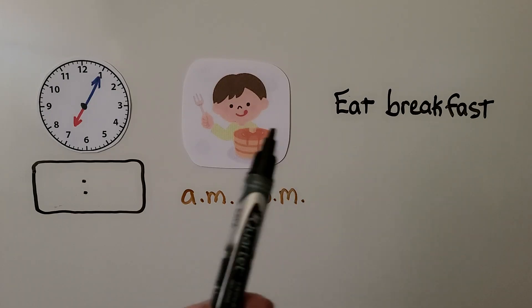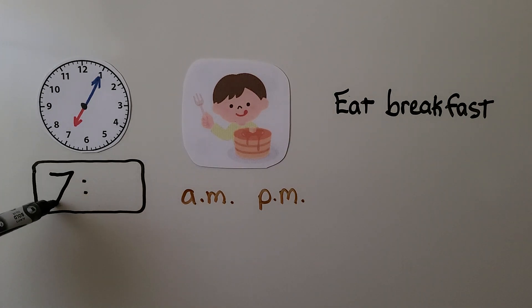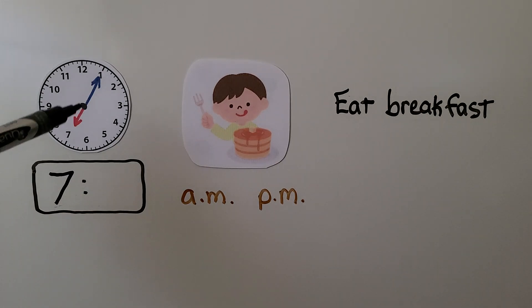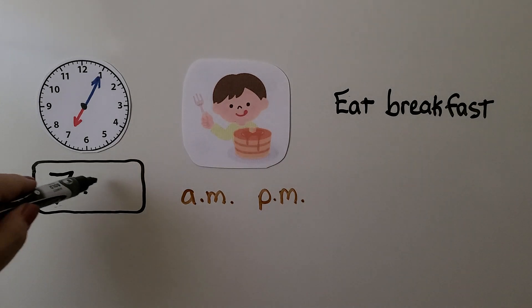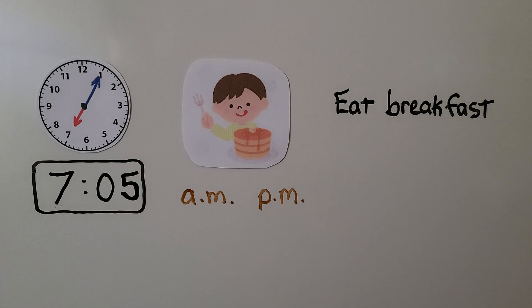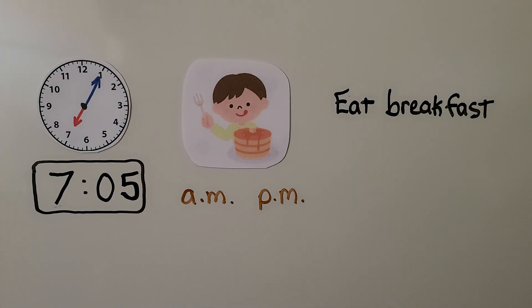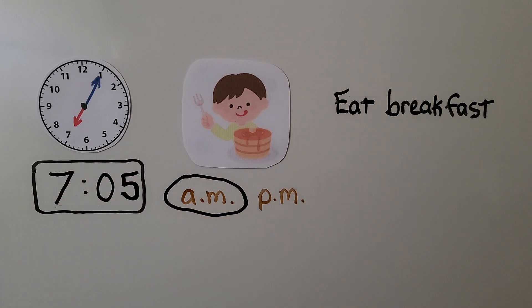This one says 'Eat breakfast.' We can see the hour hand is pointing to the seven, so we know that's the hour. The minute hand is pointing to the one, and we know that means five minutes. It must be 7:05. If you're eating breakfast, it's AM — 7:05 in the morning.